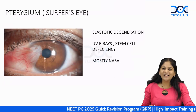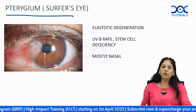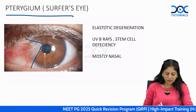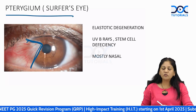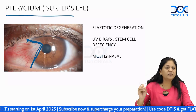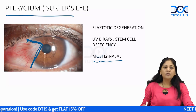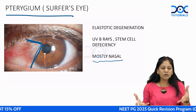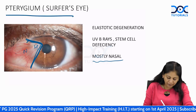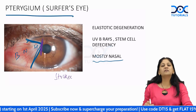Pterygium, also known as surfer's eye, is an elastotic degeneration — a wing-shaped fold of conjunctiva encroaching on the cornea. It is most commonly due to UVB exposure and sometimes localized stem cell deficiency. It is most commonly seen on the nasal part of the conjunctiva. Pterygium has a head, neck, and body; Stocker's line is the accumulation of iron on the head.